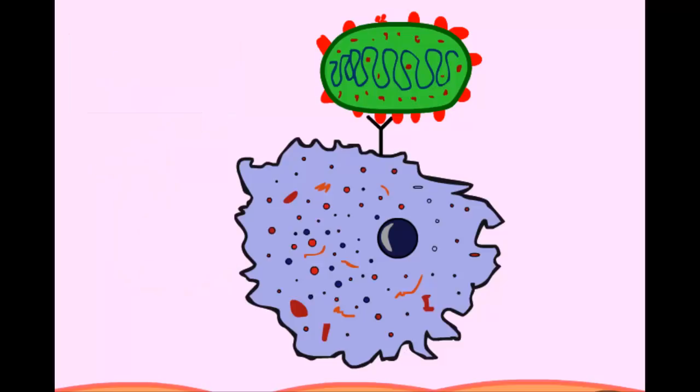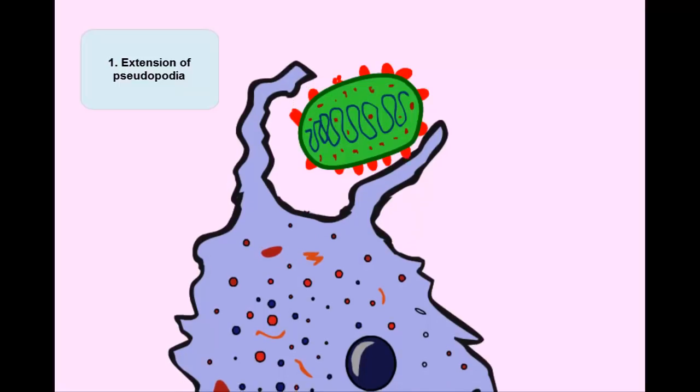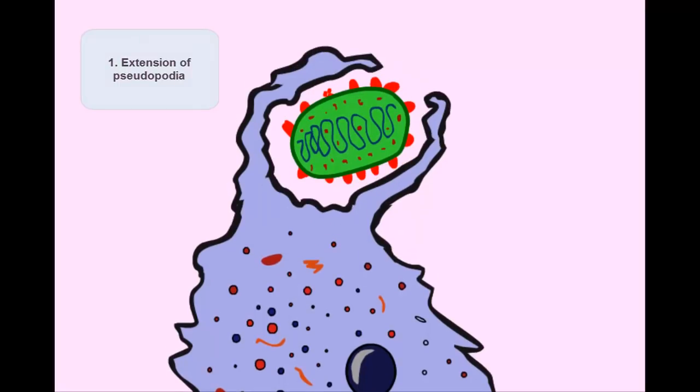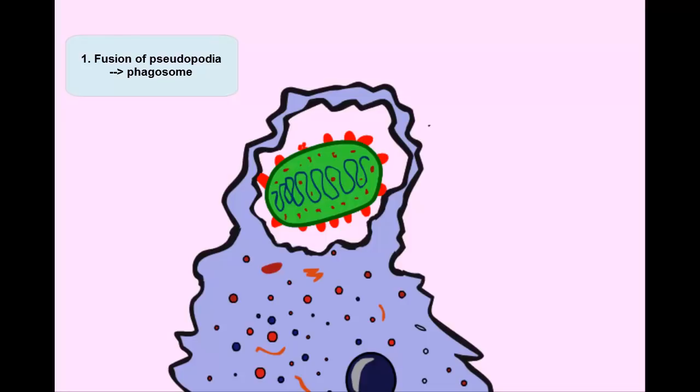So next, let's see how our phagocyte phagocytoses the bacteria and then digests it with enzymes intracellularly. Now the first step in phagocytosis is the extension of pseudopodia which extend from the phagocyte to wrap around and engulf the bacteria. Then these pseudopodia fuse together to trap the bacteria inside the phagocyte in what's called the phagosome.